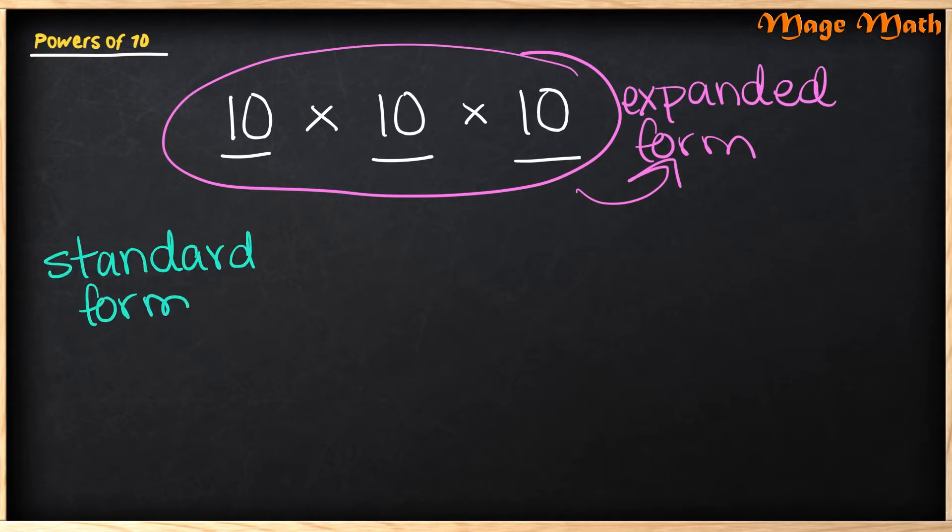The next way is called standard form, and this is how we would typically write numbers in digit form. So I would first bring my one down and I see that this has one, two, three zeros. So I know that 10 times 10 times 10 is the same as 1,000.